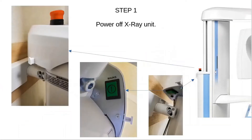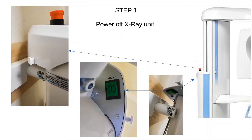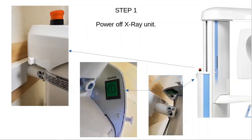To power off your X-ray unit, you need to locate the emergency button on your X-ray unit. Underneath it, you will find a power cutoff switch labeled 'mains.' Press and release that button to cut off power to the machine — that is how you power off your X-ray unit.